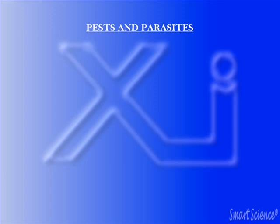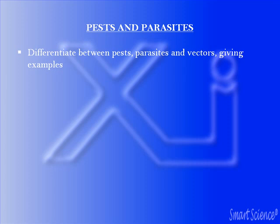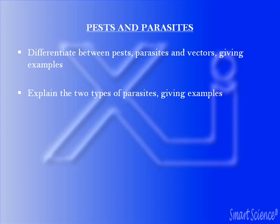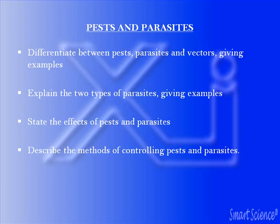Our task for today is to discuss and exhaust the topic pests and parasites. At the end of the study you should be able to: differentiate between pests, parasites, and vectors giving examples; explain the two types of parasites with examples; state the effects of pests and parasites; and describe the methods of controlling pests and parasites.